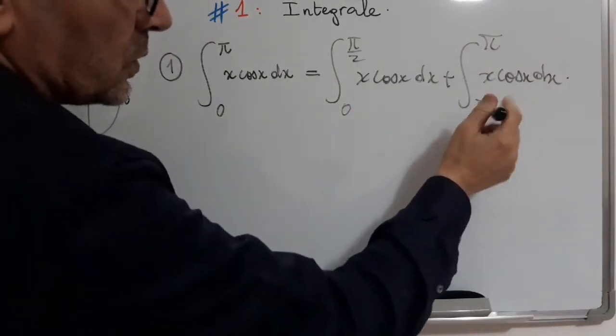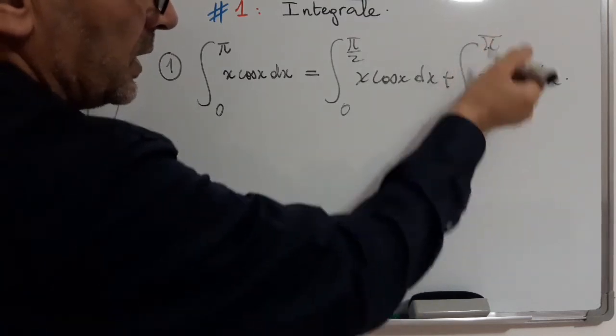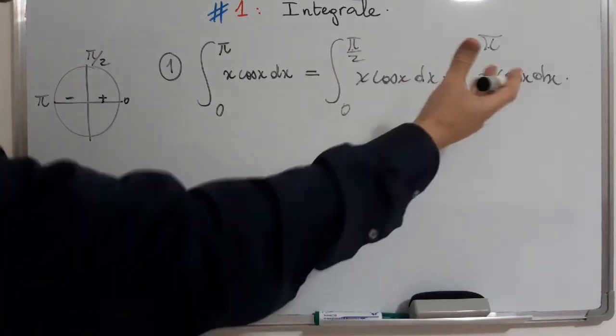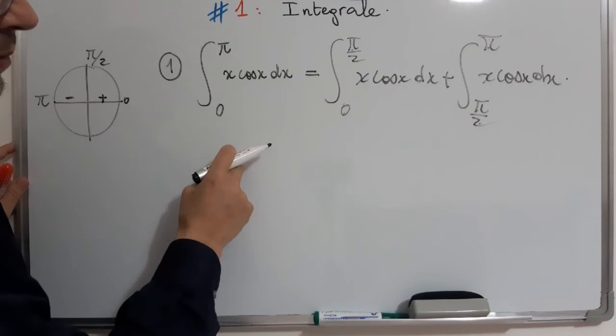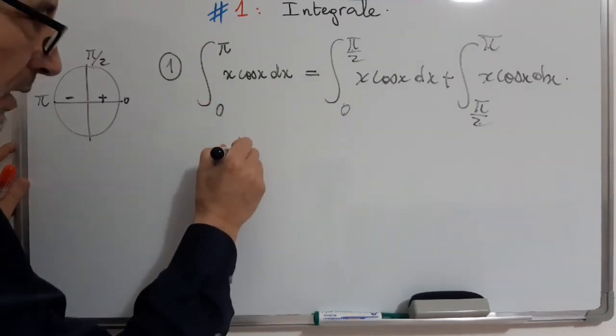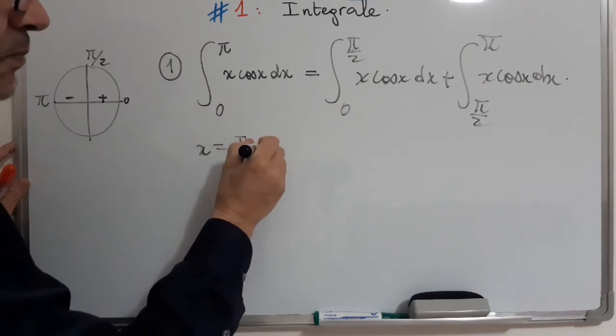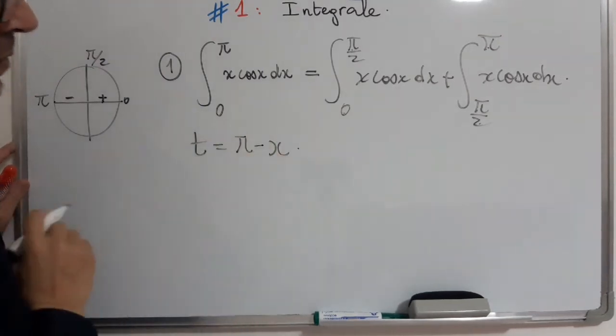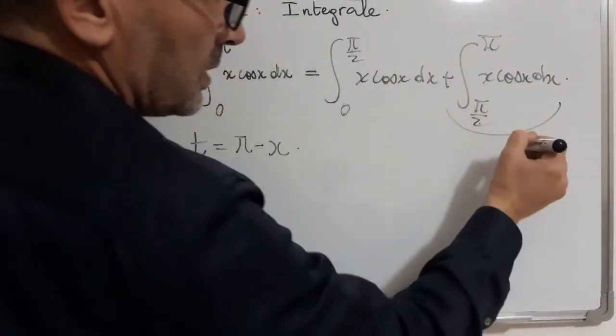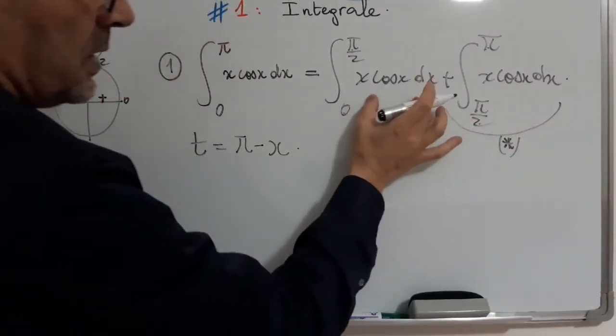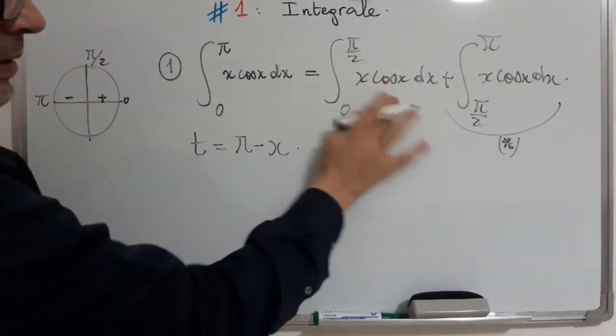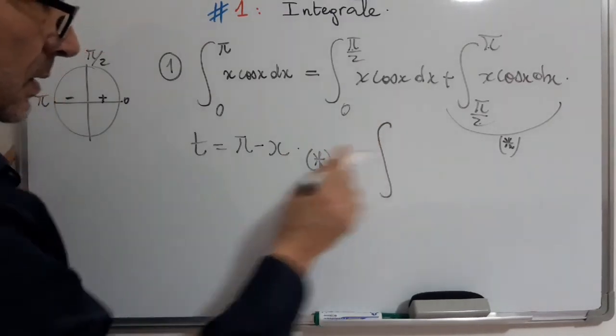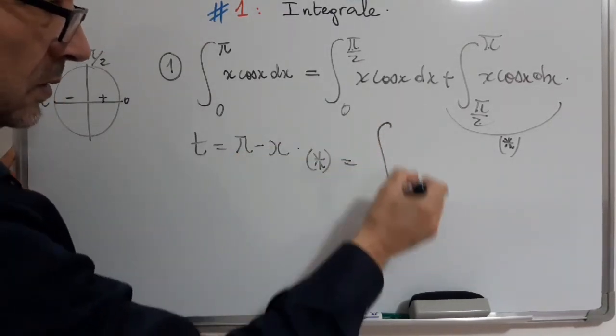Now, how to transform the interval π over 2 to π into the interval 0 to π over 2. The easy step is to consider the following variable change. We take x equals π minus... or here t equals π minus x. So, this second integral, because this is positive, no problem.